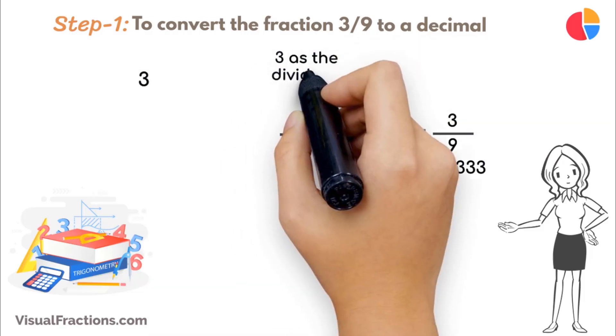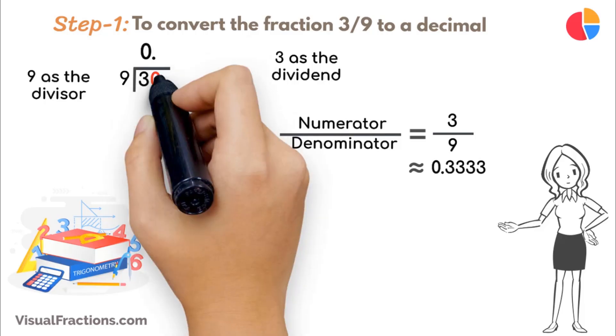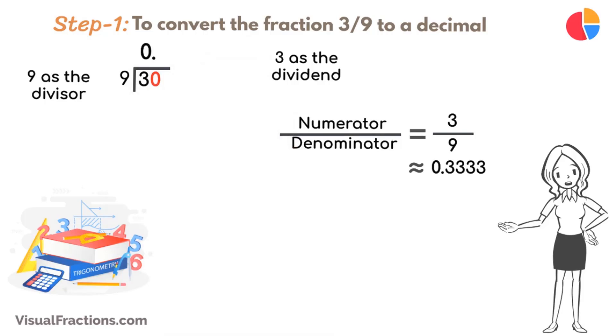Place 3 as the dividend and 9 as the divisor. Since 9 doesn't fit into 3, place a decimal point in our quotient and bring down a 0, making it 30. 9 goes into 3, 3 times, putting 0.3 in our quotient. Multiply 9 by 3 to get 27, and subtract this from 30, leaving a remainder of 3.